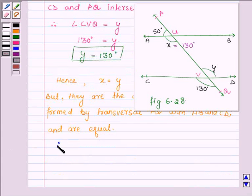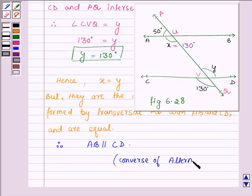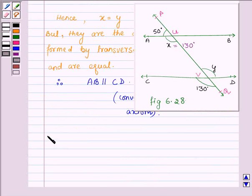Therefore, AB is parallel to CD by the converse of alternate interior angles theorem. Thus our answers are x is equal to 130 degrees, y is equal to 130 degrees, and we have shown that AB is parallel to CD. So this completes the solution. Hope you enjoyed it, take care and bye for now.